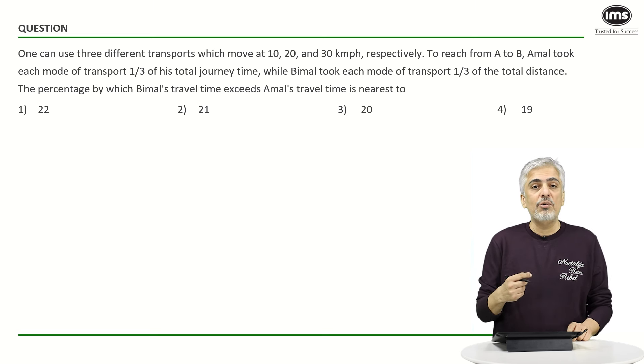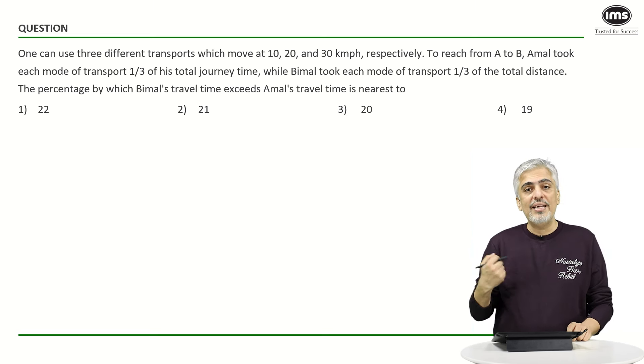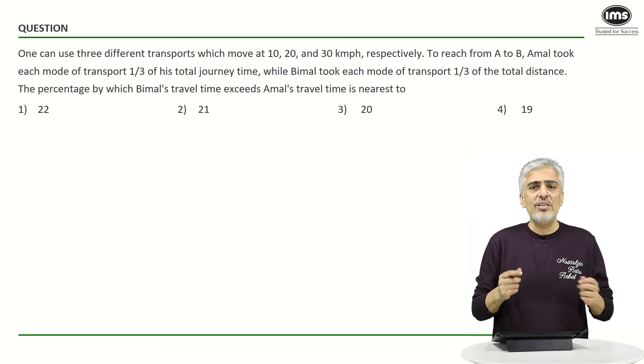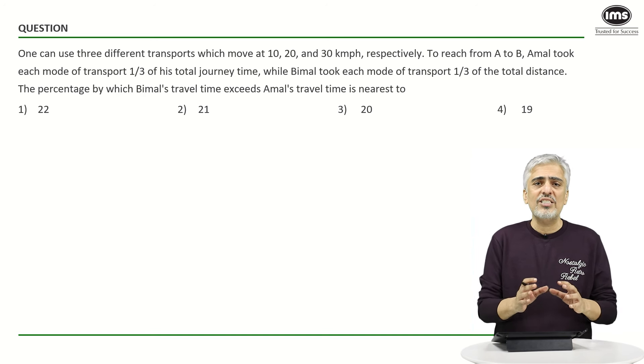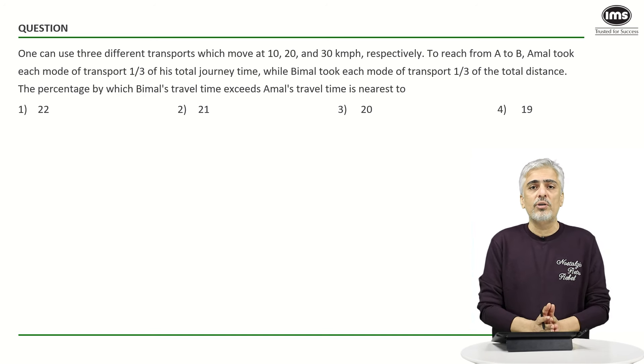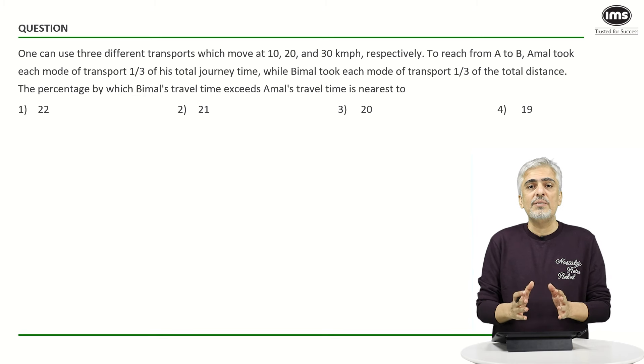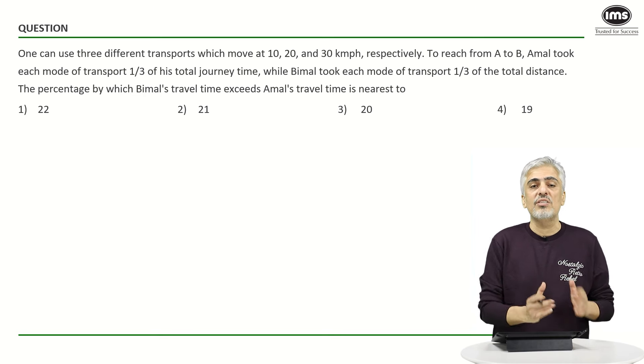So time has to exceed for Bimal. So his speed will come less. So I will talk about two different approaches. First let's talk about the basic approach. How would I have gone about it? I will first worry about the speeds because time I can just take reciprocals of the speed.